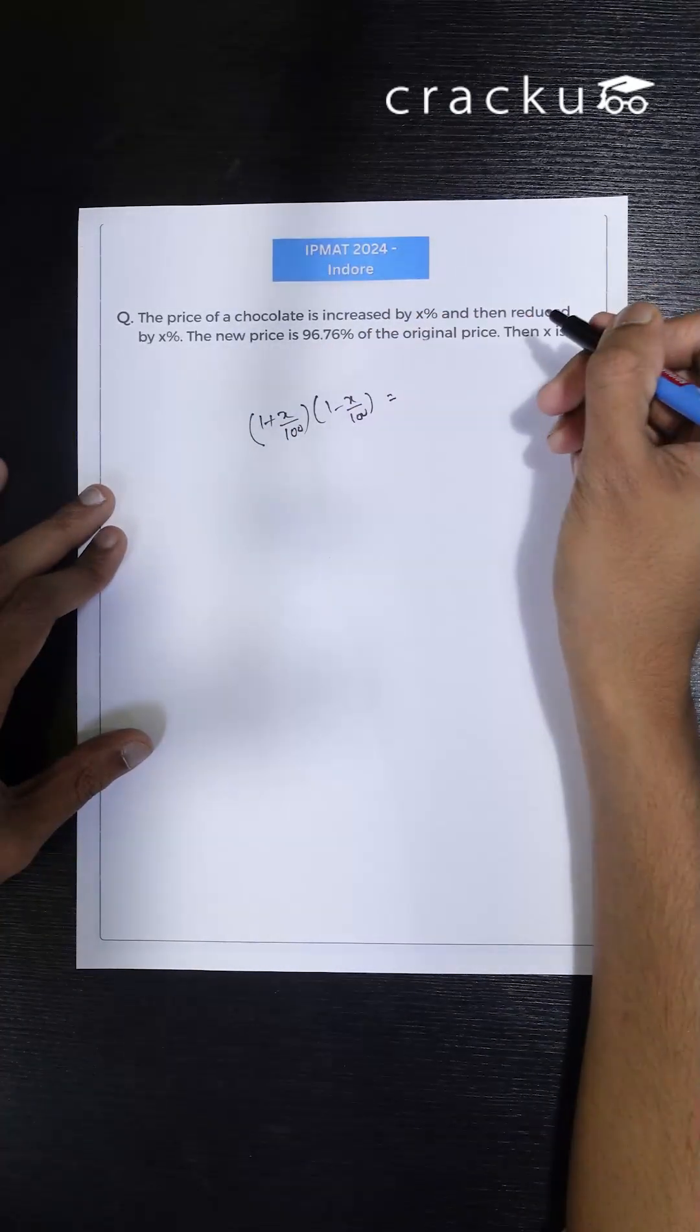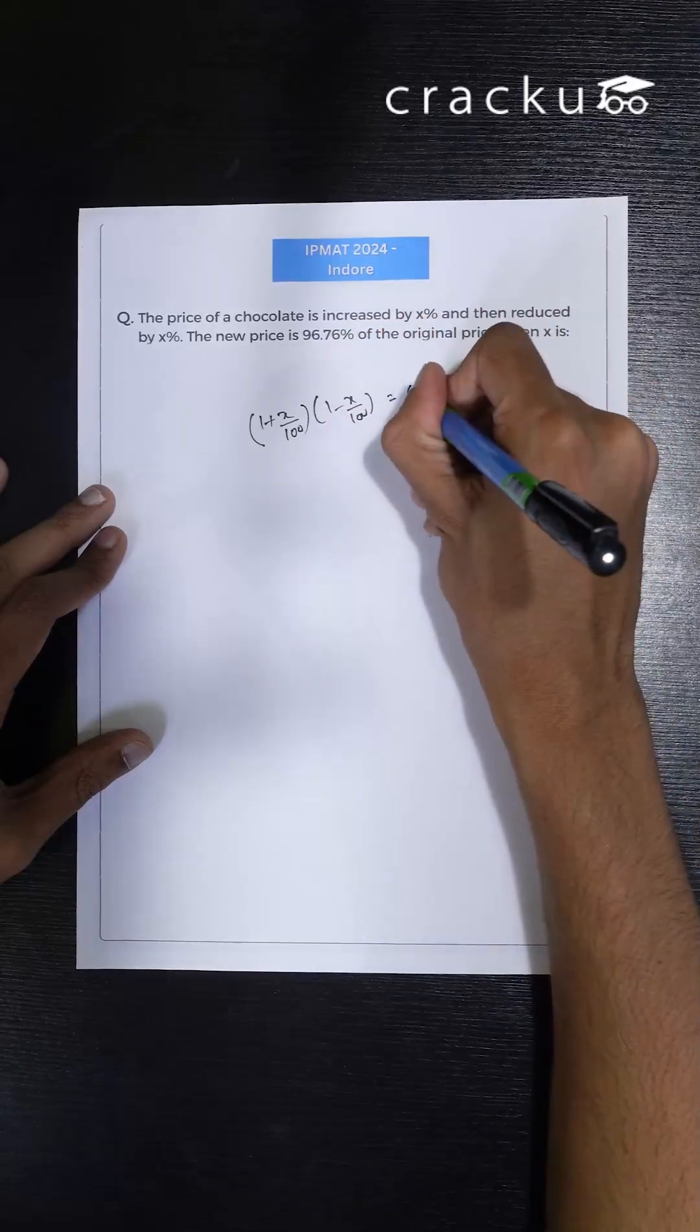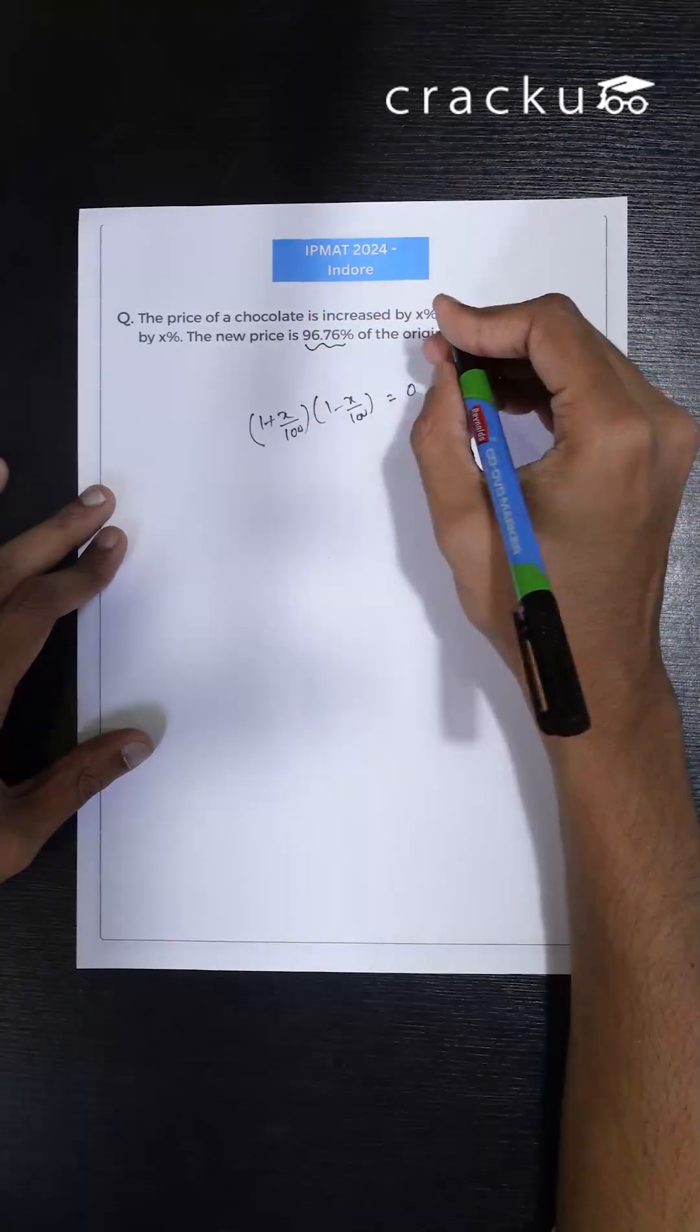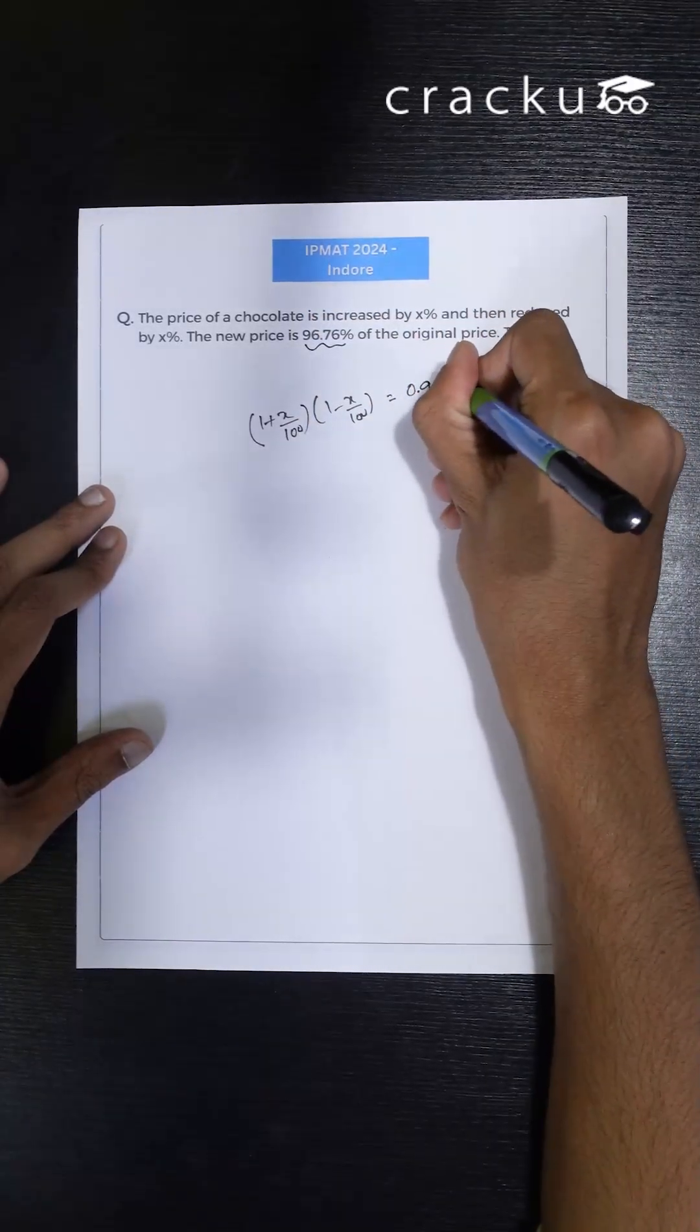This is given as 96.76 percent of the original price. So this 96.76 percent I can write as 0.9676.